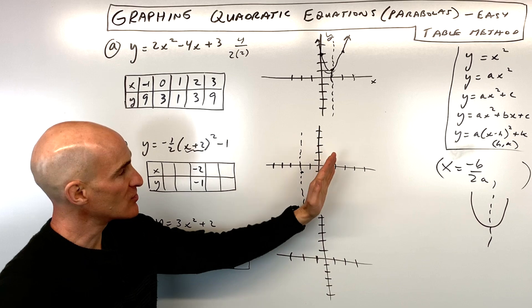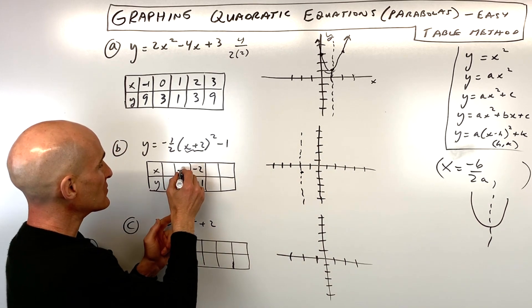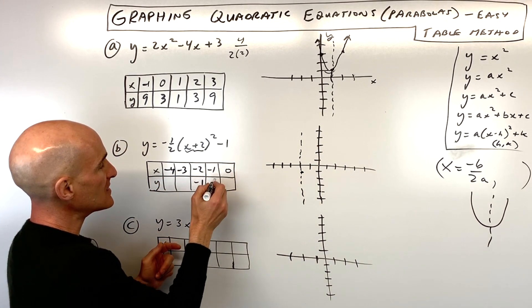Here's our axis of symmetry going right through the x-coordinate of the vertex. And we want to pick some points on either side. So I could pick, let's say, for example, negative 3 and negative 4 or negative 1 and 0.